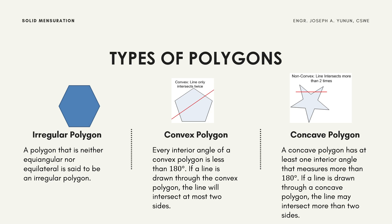If a line is drawn through a concave polygon, the line may intersect more than two sides. As shown with this star polygon, a horizontal line drawn through it intersects probably four sides of the given polygon.